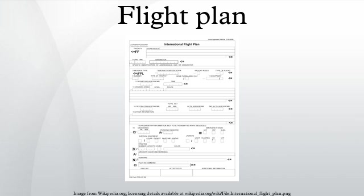ICAO standards also cover operation of aircraft, aerodromes, air traffic services, accident investigation, and the environment. A simple example of ICAO responsibilities is the unique worldwide names used to identify navaids, airways, airports, and countries. Knot is a unit of speed used in navigation equal to one nautical mile per hour.